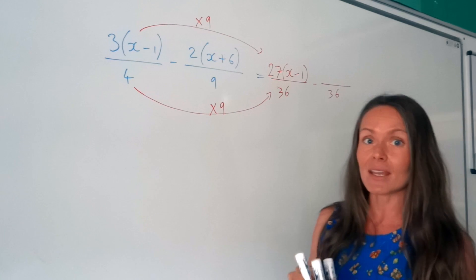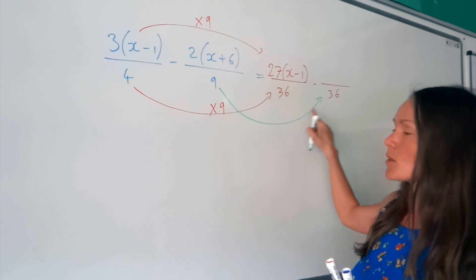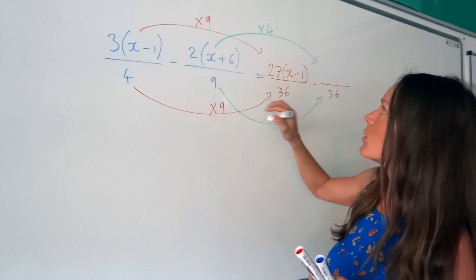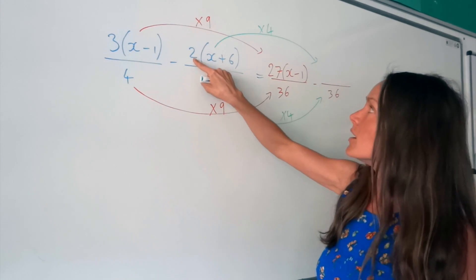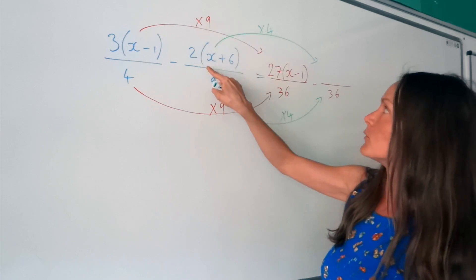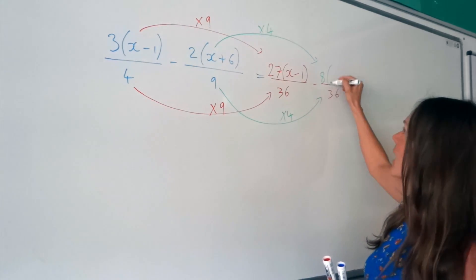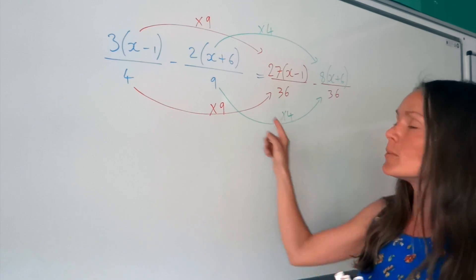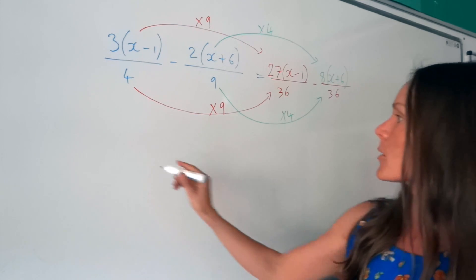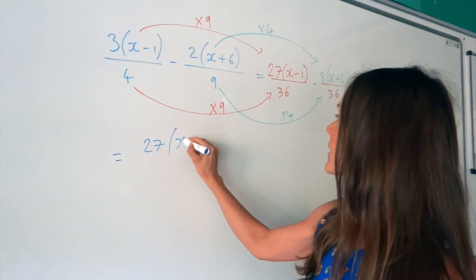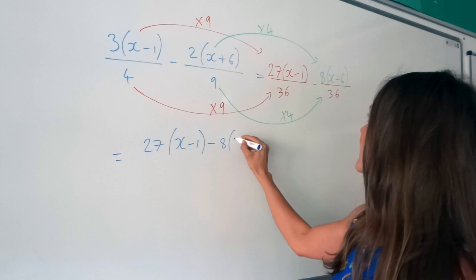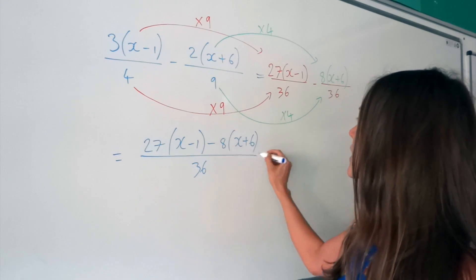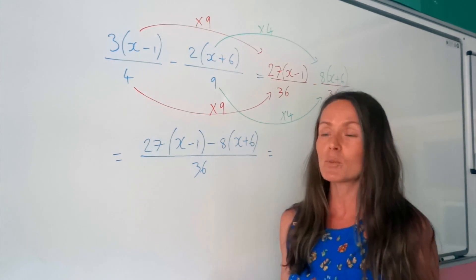I'm going to do exactly the same thing with the second fraction, except this time to get from 9 to 36, we must multiply by 4. So I'm going to do the same with this numerator and multiply by 4. You only need to multiply this number by 4 — it's the same thing as multiplying the whole thing by 4. So 2 multiplied by 4 is 8, and the bracket just stays the same for the moment. Now I've got my common denominators, so I can put them in one fraction and start subtracting. So I've got 27 brackets (x minus 1), and then I've got minus 8 brackets (x plus 6). Don't forget, you're subtracting these fractions.